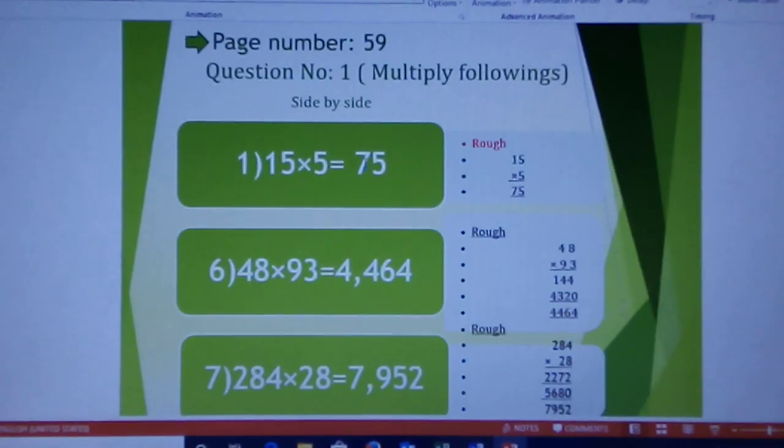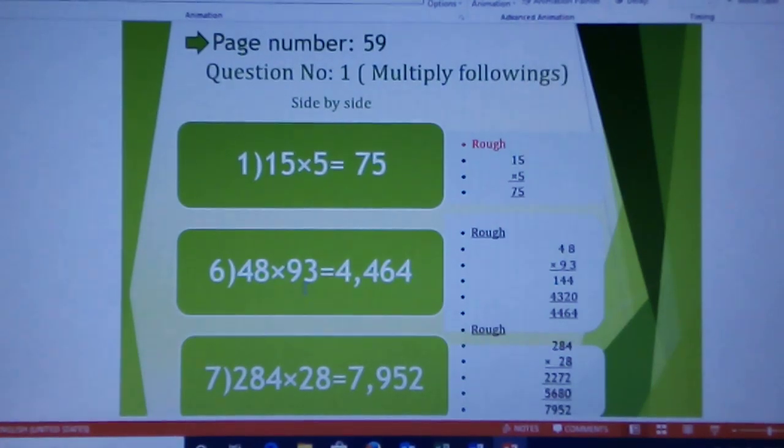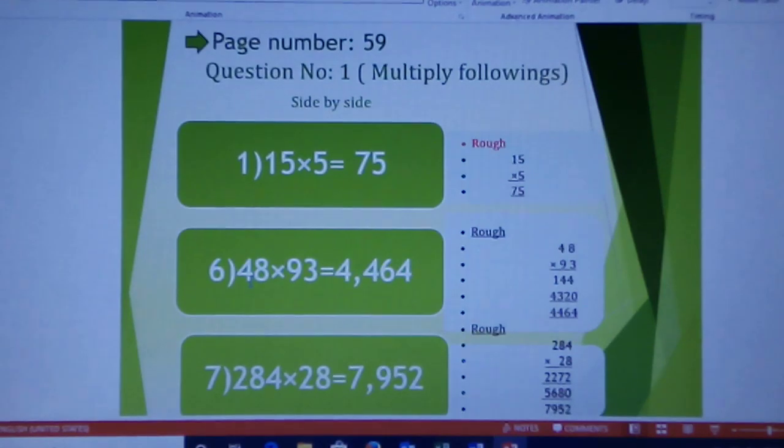Number 6: 48 × 93 = 4464. At first 48 × 3. 8 × 3 = 24, 4 in the ones place and carry it 2. Now 4 × 3 = 12 and 12 plus carry 2 = 14. 4 in the tens place and carry it 1 in the hundreds place.